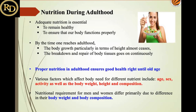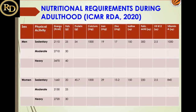Energy and nutritional requirements depend on factors like sex, age, height, weight, and body composition. The RDA is given by the Indian Council of Medical Research (ICMR) and is updated based on changes in lifestyle and dietary patterns. The table differentiates between men and women and mentions three types of physical activities: sedentary, moderate, and heavy.